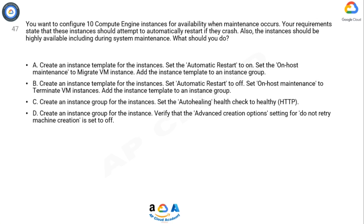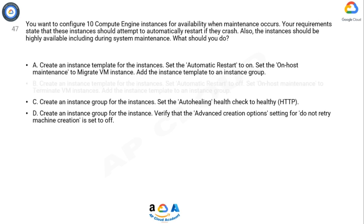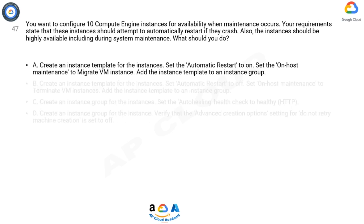The correct answer is Option A. To configure compute engine instances for availability when maintenance occurs and to enable automatic restart, you can follow these steps in the Google Cloud Console. Navigate to the Compute Engine section, select the Instances page, and select the 10 instances that you want to configure for availability. From the Actions menu, select Edit Instance Settings.